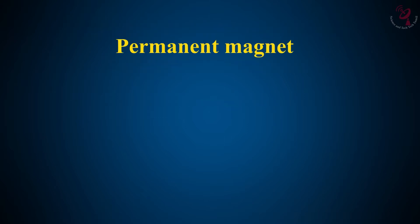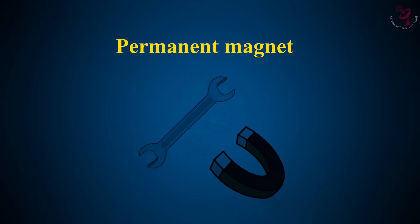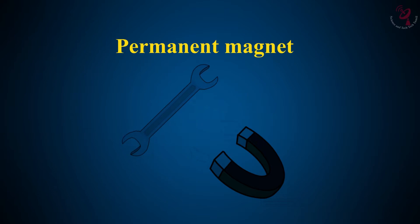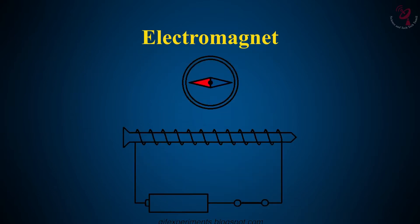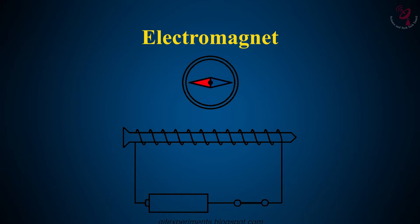The permanent magnet is a type of magnet whose magnetic field remains constant. Whenever any metal comes near the permanent magnet, it will attract immediately. On the other hand, the electromagnet acts as a magnet while electricity is applied on it. After the electricity is cut off, it remains as metal.